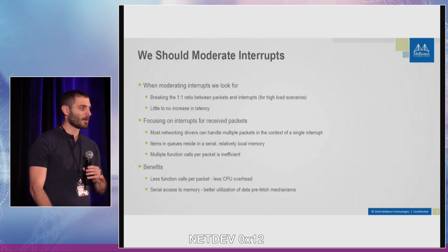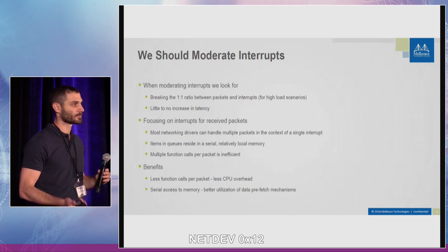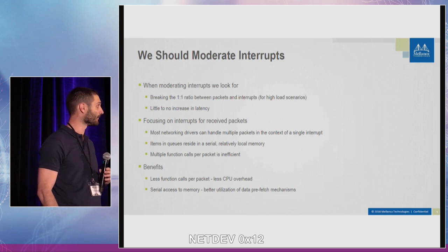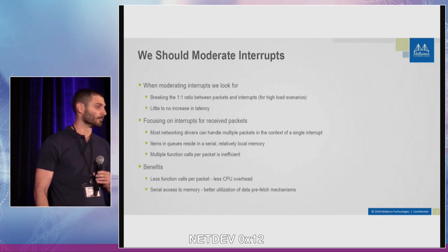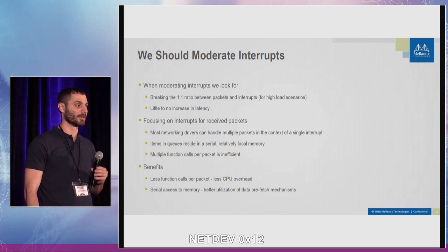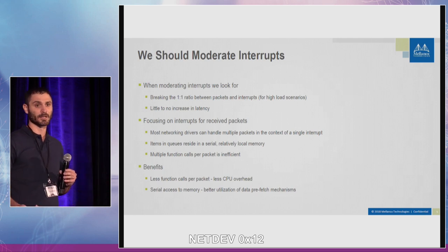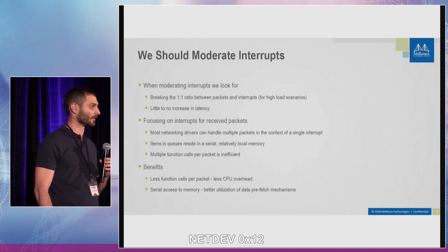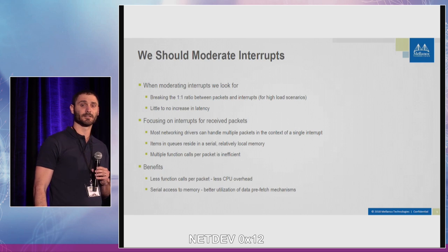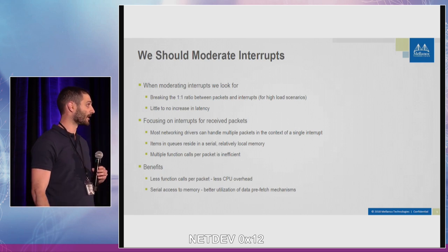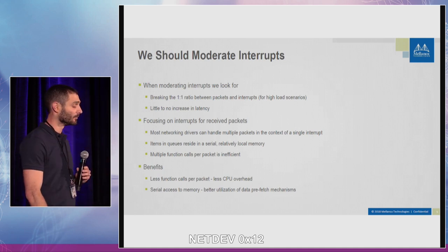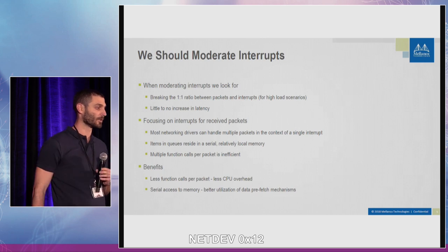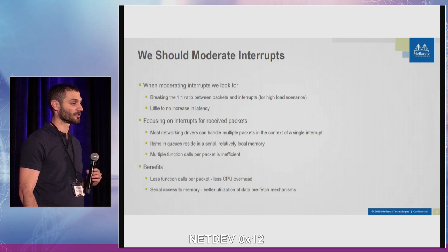What exactly is the problem? We should moderate interrupts. Interrupt handling is basically utilizing CPU. If we do it too often and not efficiently enough, we are going to wind up with a CPU bottleneck. What we are looking for is breaking the one-to-one ratio between packets and interrupts. We want more than one packet handled by a single interrupt, and we want to do it without increasing latency, or affecting it very little. Most or all drivers can process more than one packet from a single interrupt. The queue is serial memory, and it makes a lot of sense to access packets together and not one by one. Multiple function calls for each packet is, of course, inefficient.